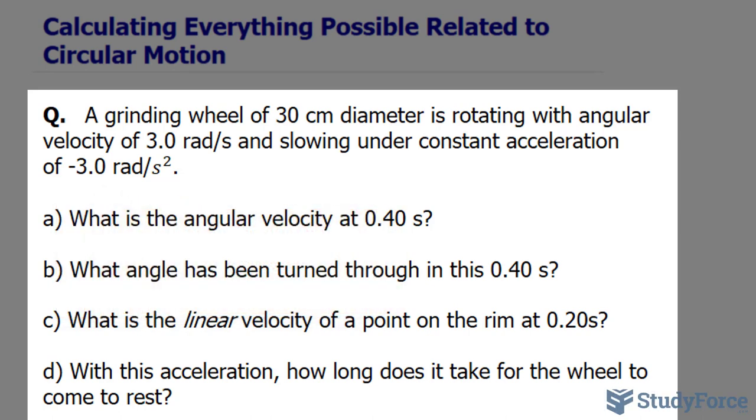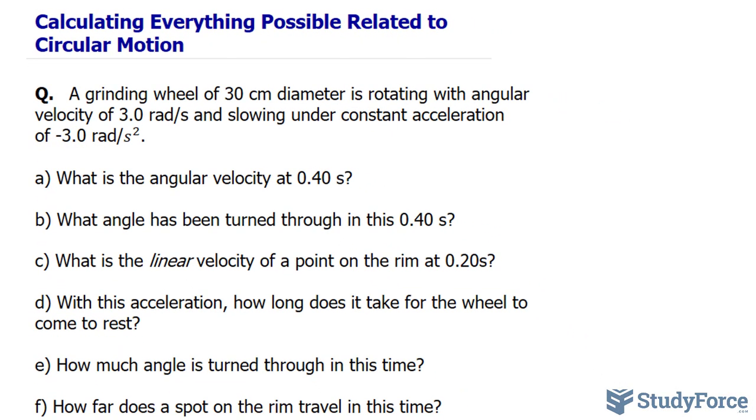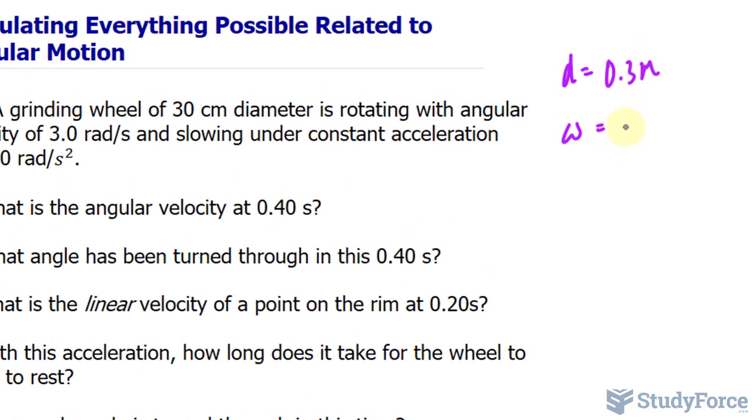In the very first question, what is the angular velocity at 0.4 seconds? I want to start off by writing down everything I know for reference. So we're told that the diameter is 30 centimeters, which is the same thing as 0.3 meters. The angular velocity, which I'll represent by the Greek letter omega, is 3.0 radians per second.